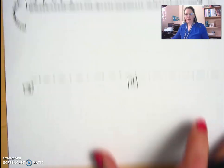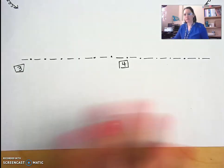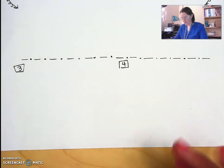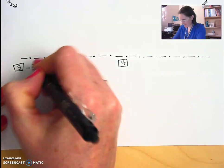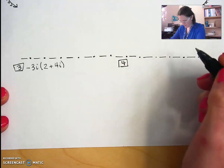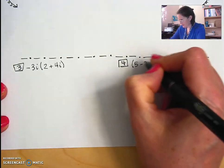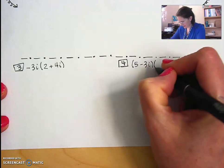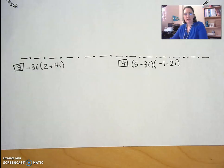Now down here, I'm going to give you some problems to try. I want you to write them down and then pause the video and try them on your own. The first one for number 3 is negative 3i times parentheses 2 plus 4i. And number 4 is parentheses 5 minus 3i times parentheses negative 1 minus 2i. So pause the video and then try those problems.